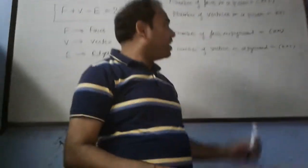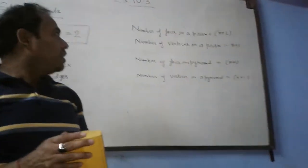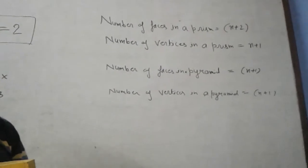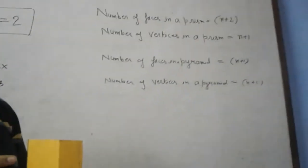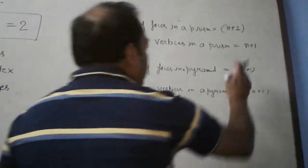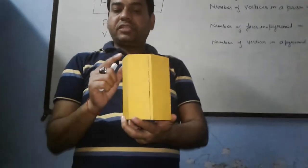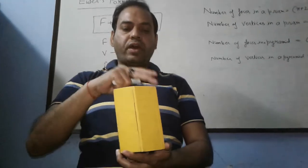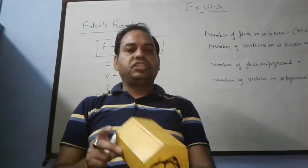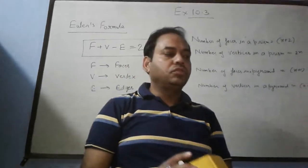Number of vertices in a prism: 2n. I have written it correctly, 2n. Pentagonal has 5 vertices, 1, 2, 3, 4, 5. Sorry, this is 6, and 6 is the lower 1, 2, 3, 4, 5, 6. So 2n, which is 2 into 6.